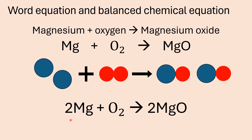If you check this equation, you can see that you have two magnesium atoms on the reactant side — the left side — and two magnesium atoms on the product side — the right-hand side. And then the same: two oxygen atoms on the left-hand side, and there are also two oxygen atoms on the product side. So the equation is balanced.